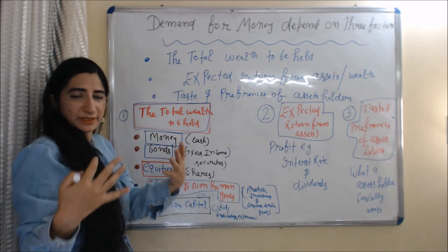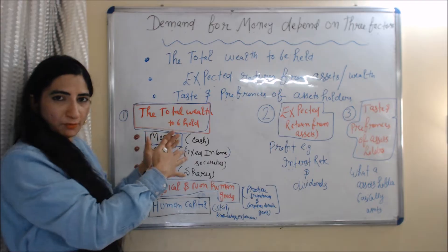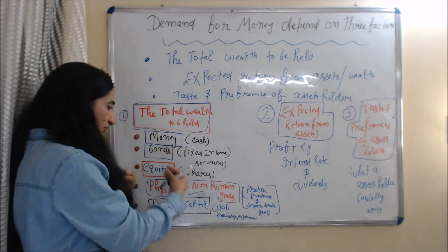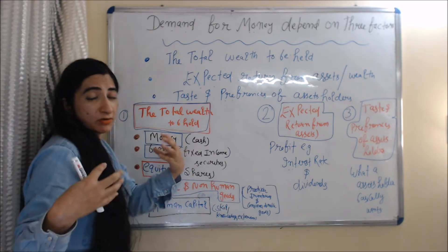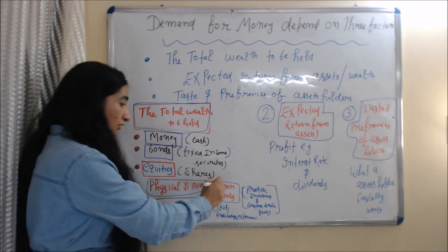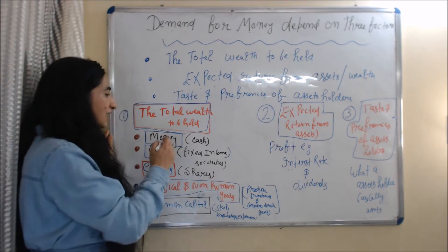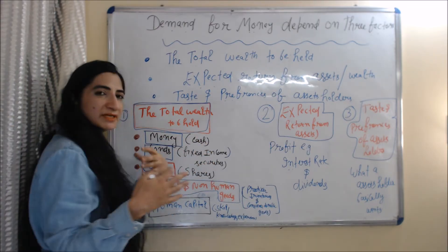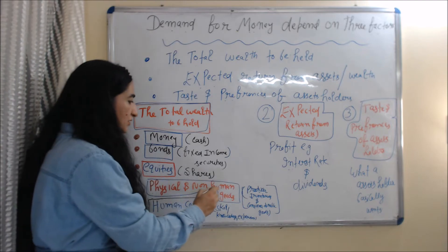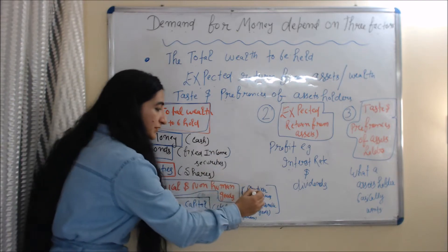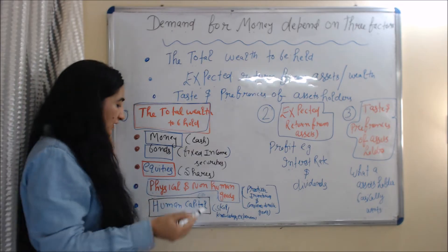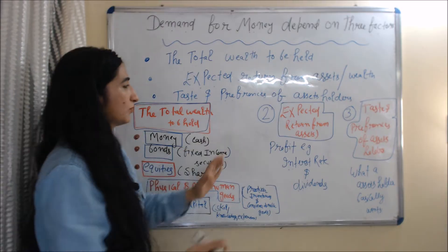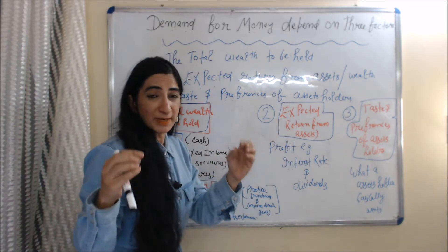First, we talk about total wealth to be held. According to Milton Friedman, we can hold wealth in various forms — for example, in the form of money, bonds, equity, physical and non-human goods, and human capital. Money refers to cash, bonds are fixed income securities, equities are shares, and physical non-human goods include producer inventories and consumer durable goods.